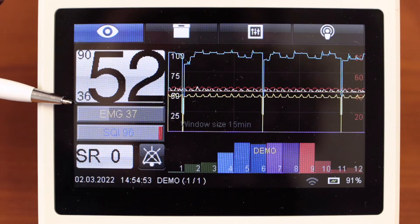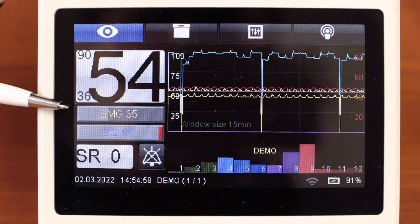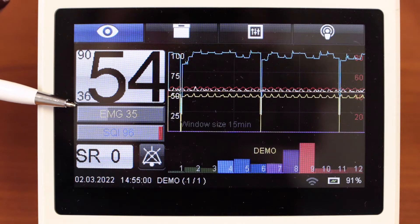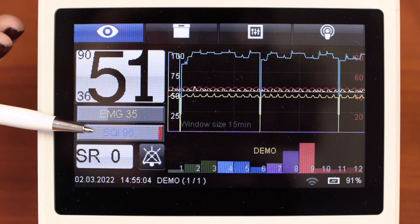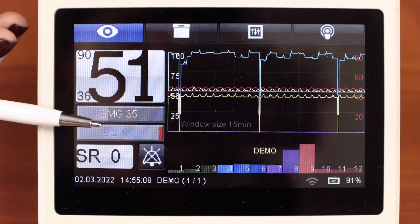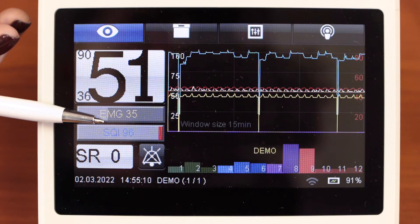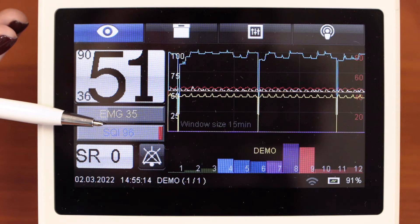EMG component is 35. If it is more than 50, this is estimated as a patient wakes up. Signal quality index is more than 90. It is a very good signal quality. Even with a value of 50, the signal can be assessed as reliable.